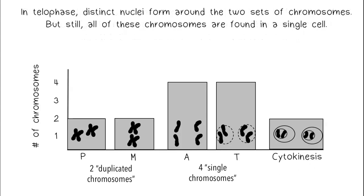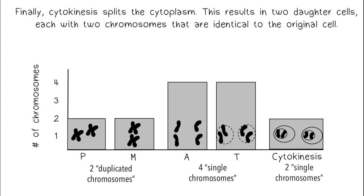In telophase, distinct nuclei form around the two sets of chromosomes, but still all of these chromosomes are found in a single cell. Finally, cytokinesis splits the cytoplasm. This results in two daughter cells, each with two chromosomes, that are identical to the original cell.